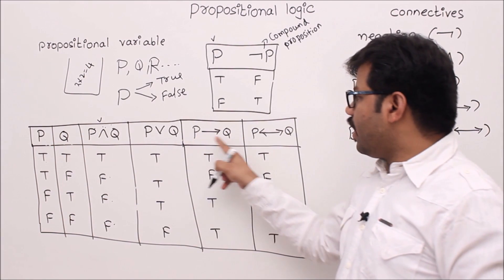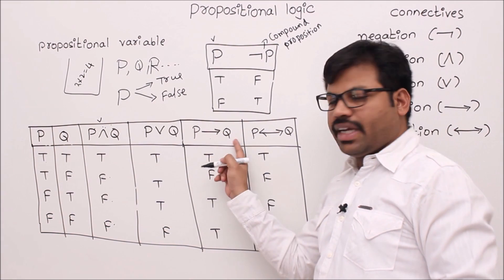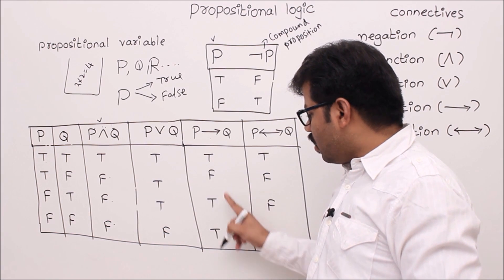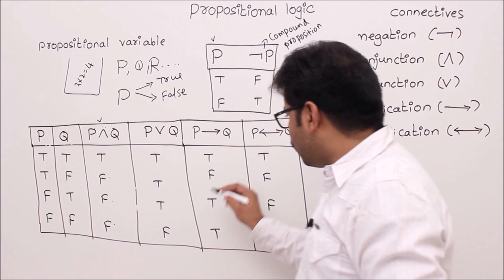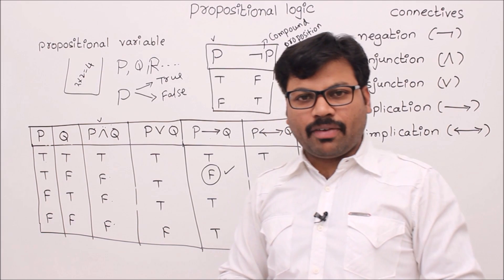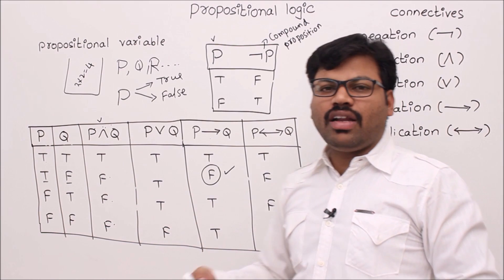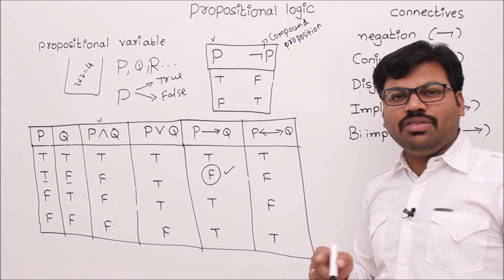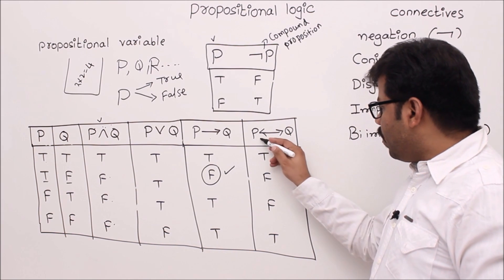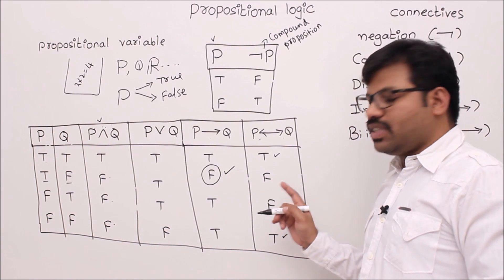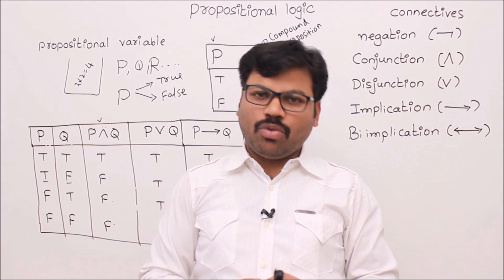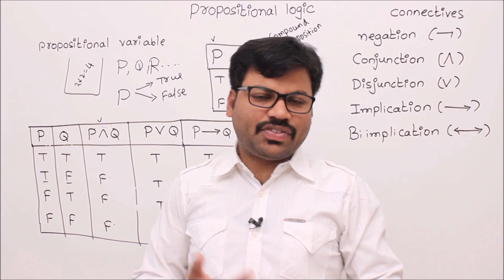For implication: P→Q can be false in only one case — where P is true and Q is false. In all other cases it is true. That is a very important point to remember. For bi-implication: P↔Q is true when both P and Q are true, and also true when both P and Q are false. In other cases it is false. These are all rules to be remembered.